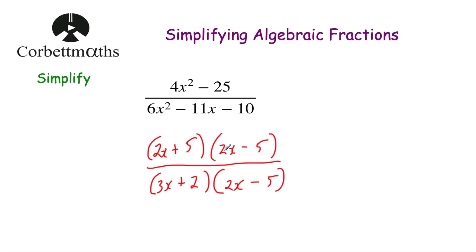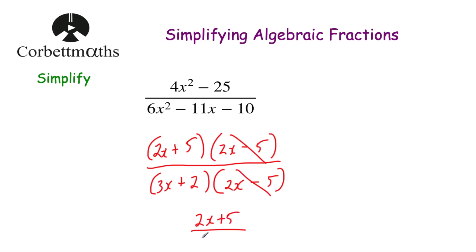We've got 2x minus 5 in both the numerator and the denominator, so we can cancel those brackets. We're left with 2x plus 5 over 3x plus 2, and that's our answer.